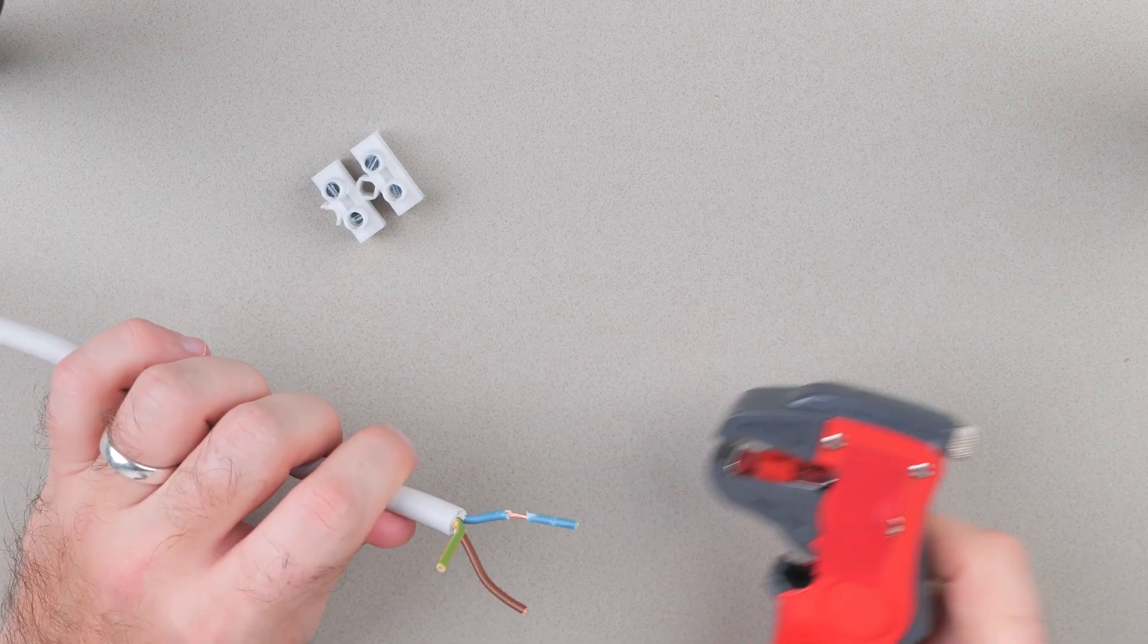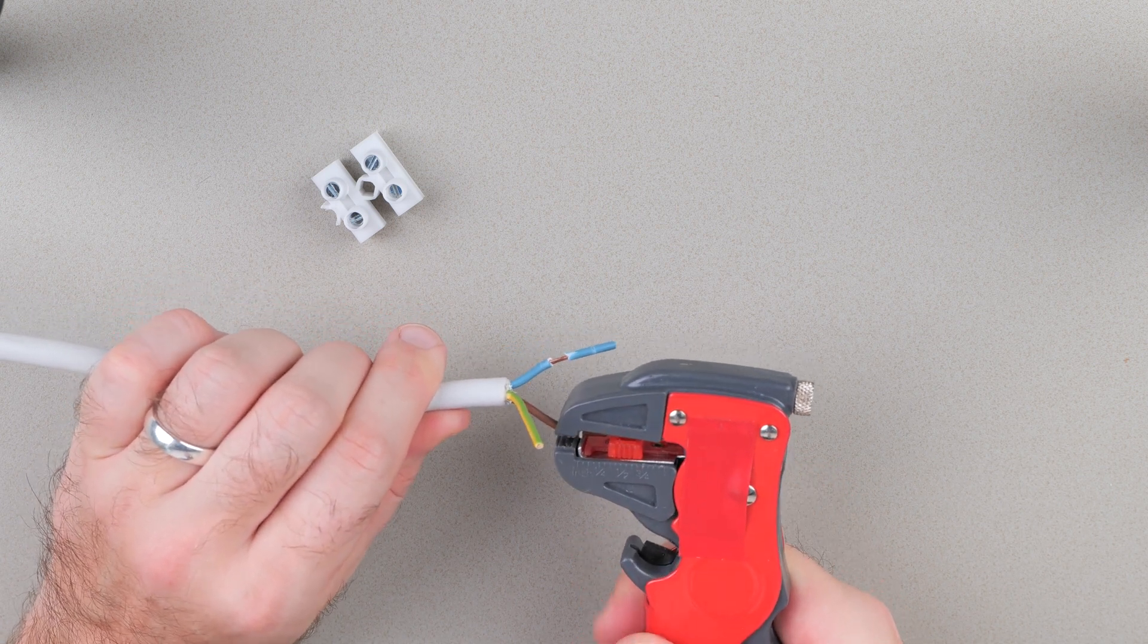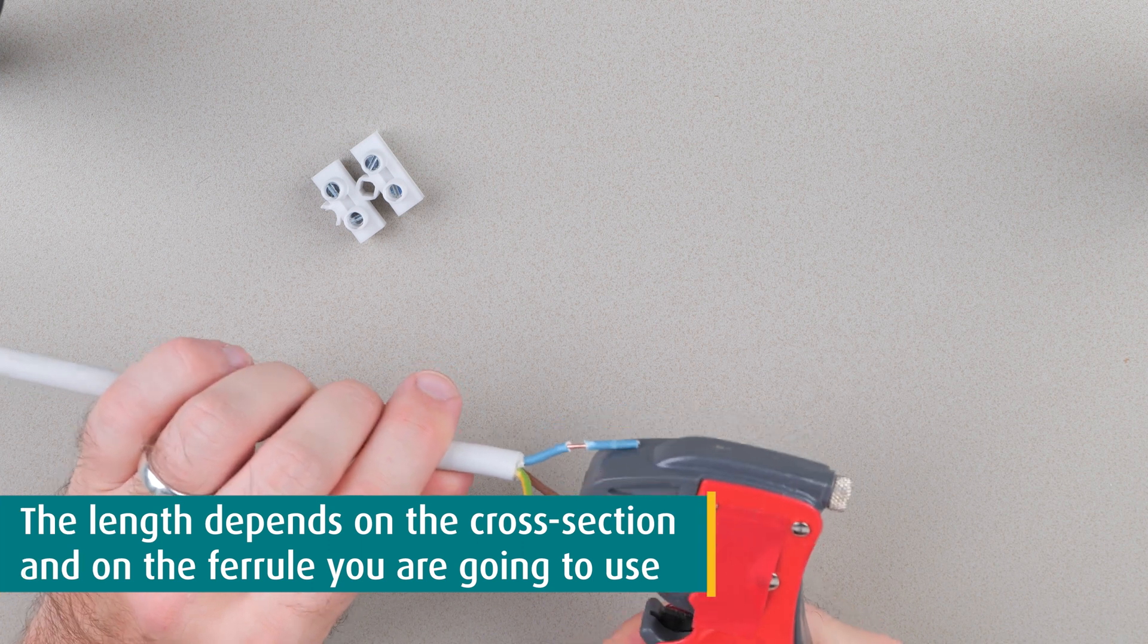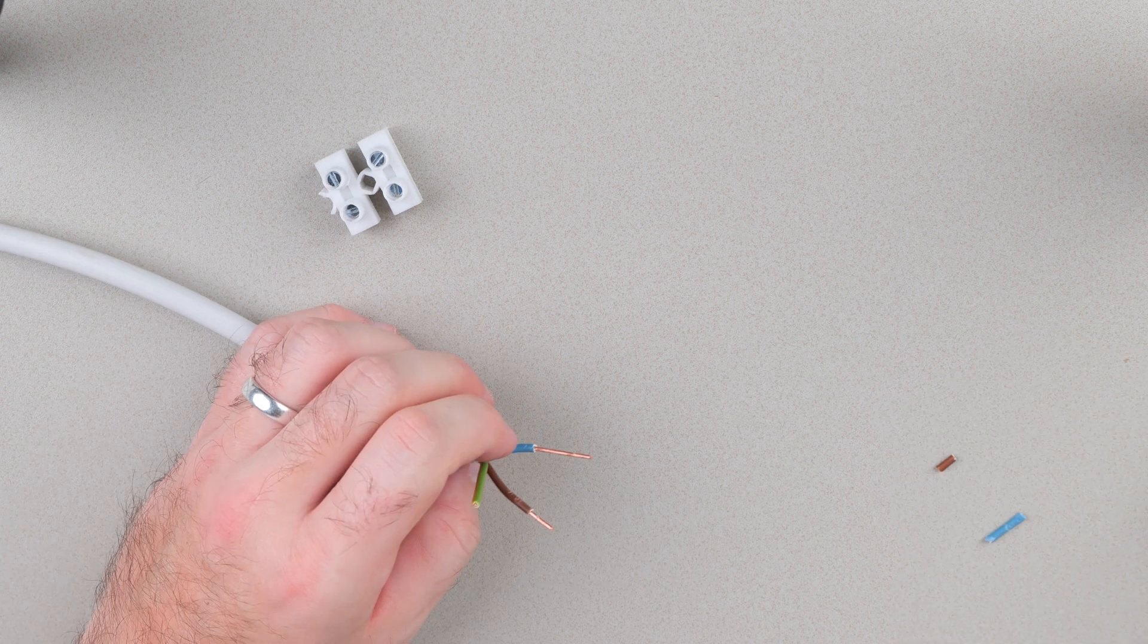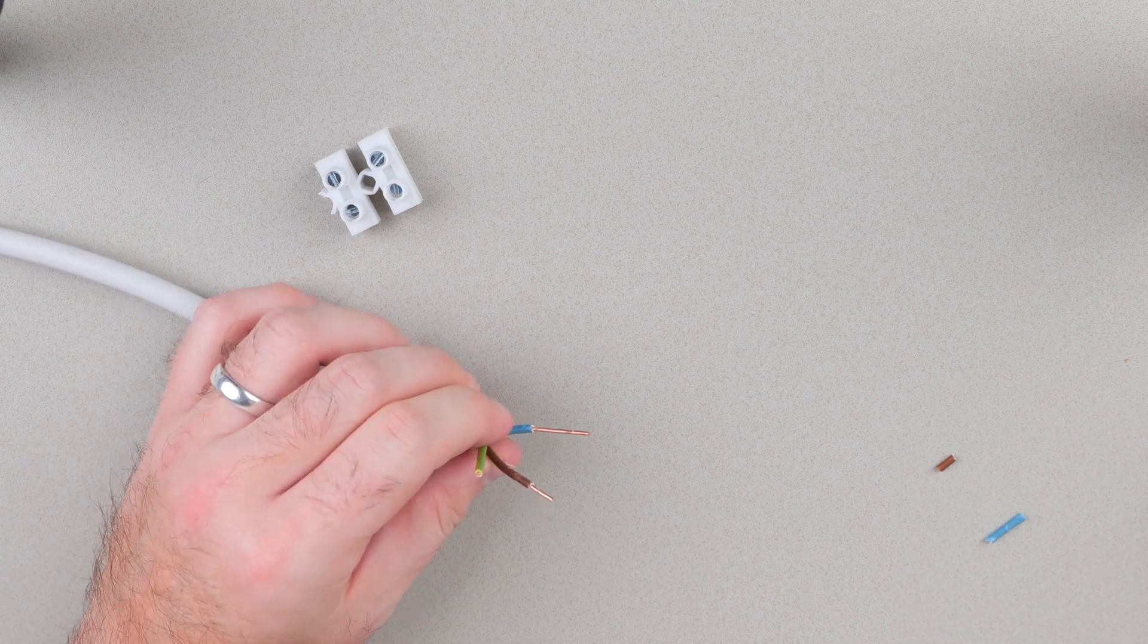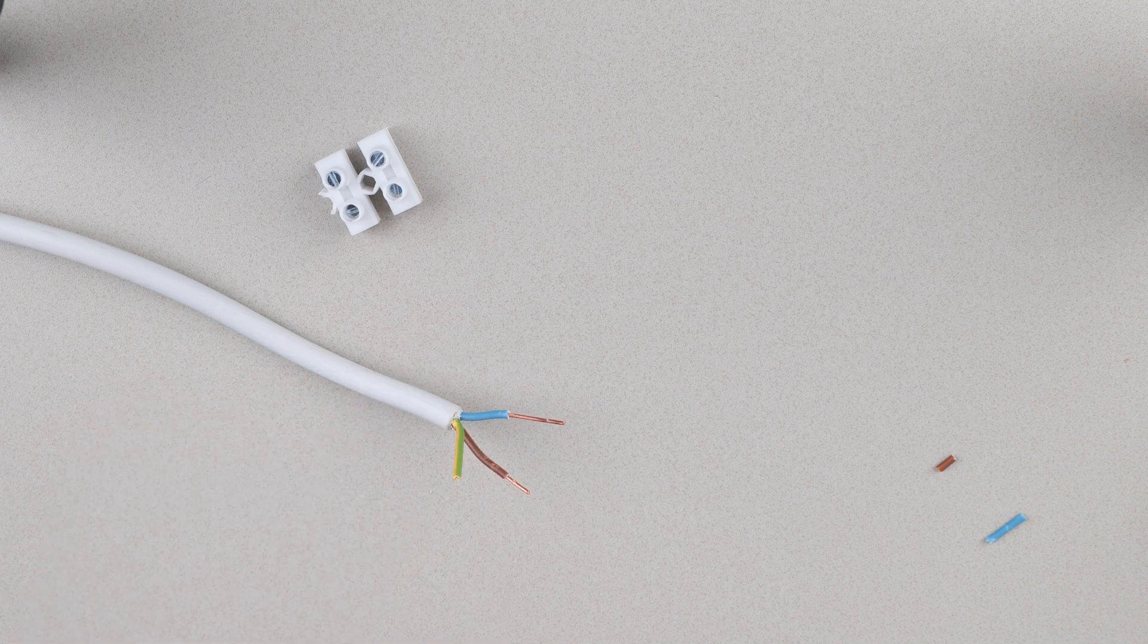The length of the uninsulated part depends on the cross section and the according ferrule you are going to use. I will uninsulate a part of roughly 8mm length. A wire stripper is much faster and more comfortable than a knife, so it's highly recommended to use one.